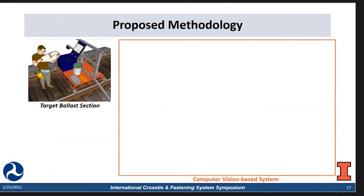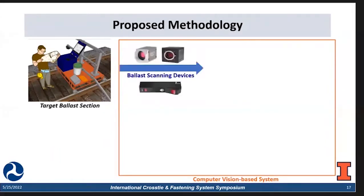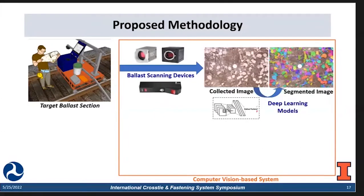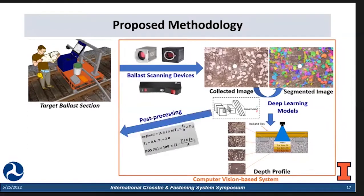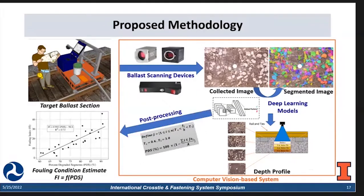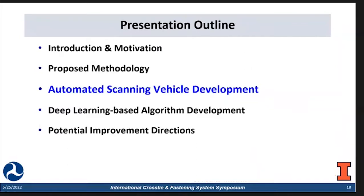Here is our final proposed method. This image shows our prototype of the ballast scanning vehicle. We will deploy it at the target ballast section and utilize several ballast scanning devices to collect the required images. Then we will run our deep learning models to segment the collected images. At the same time, we will also obtain a depth profile of the section at different depths to help us better understand and evaluate the fouling condition. Our platform will capture a long scan of the track section to provide continuous results about the fouling condition. As the last step, we do post-processing to calculate the fouling condition estimate.